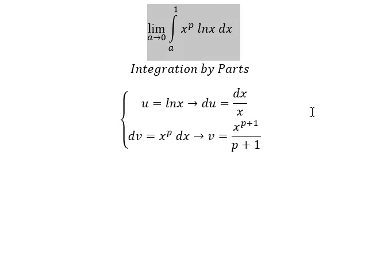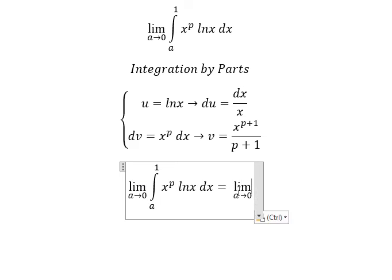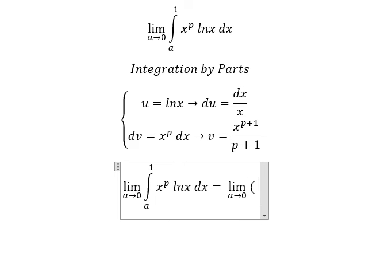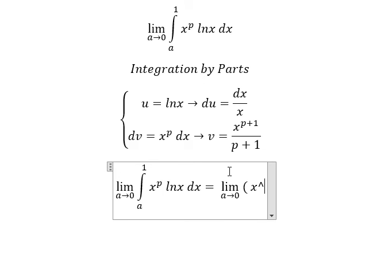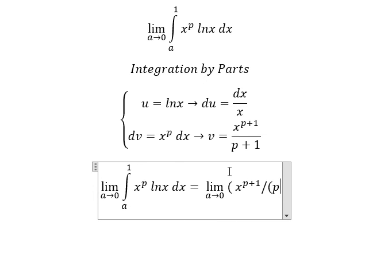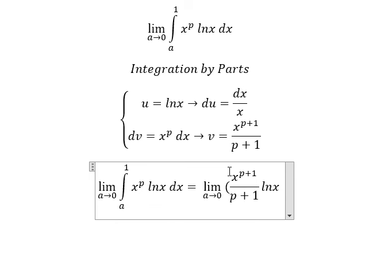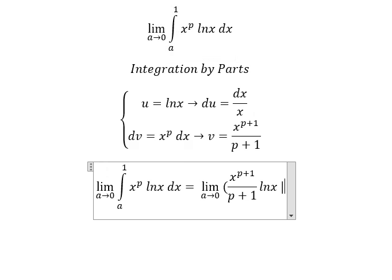So we can write this out. We have u multiplied by v, which should be: we have the limit, and that is s to the power of b plus one over b plus one, multiplied by ln(s), with the bounds from a to number one.